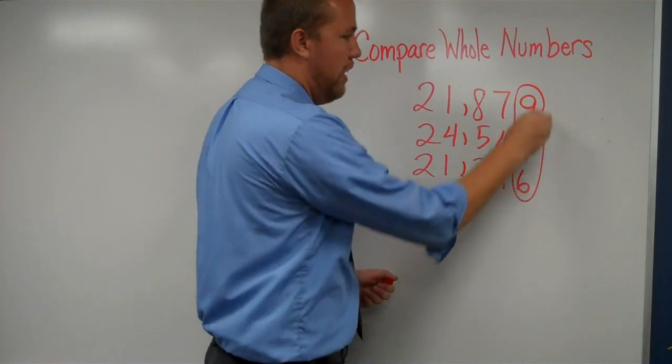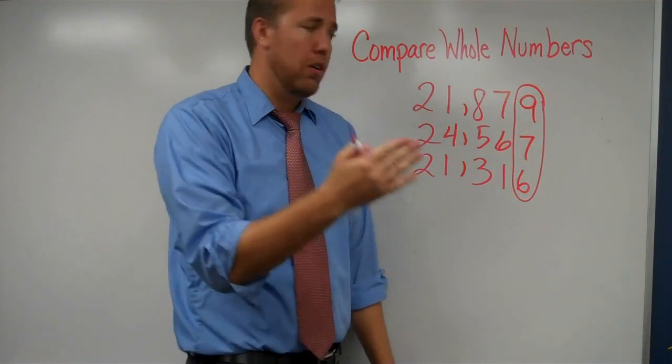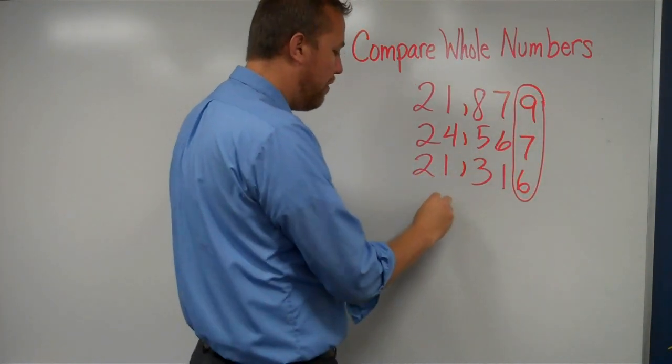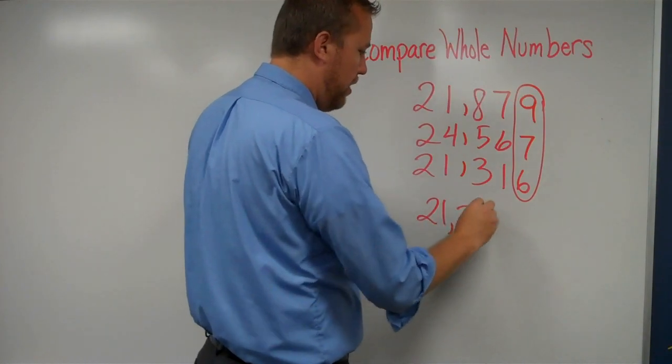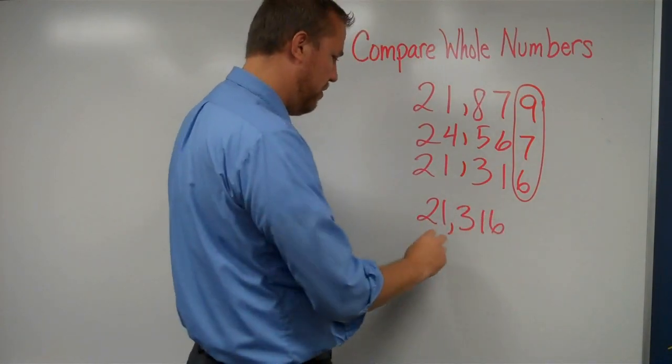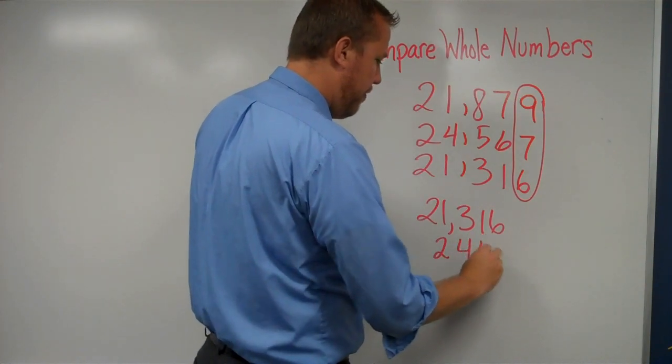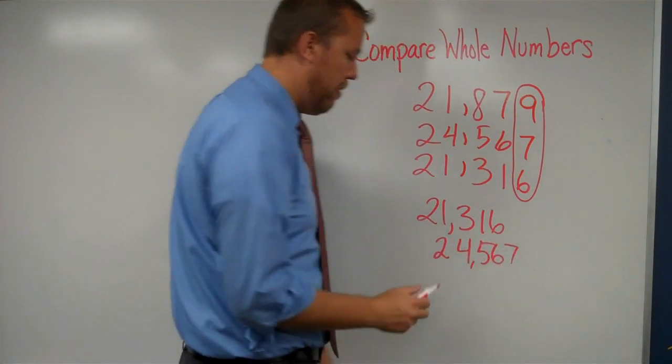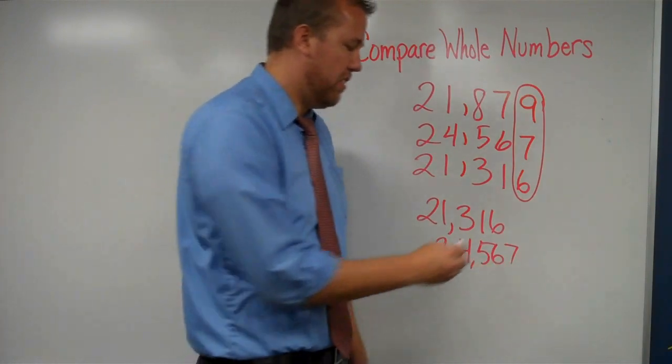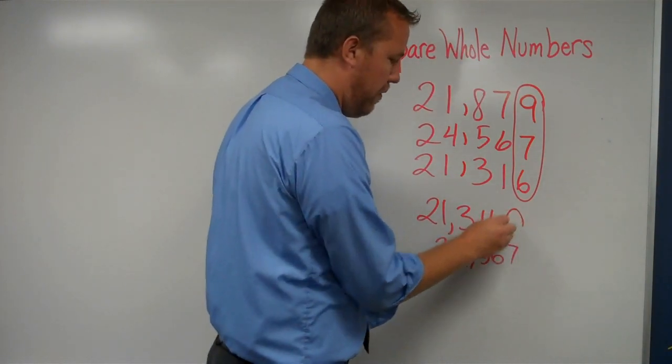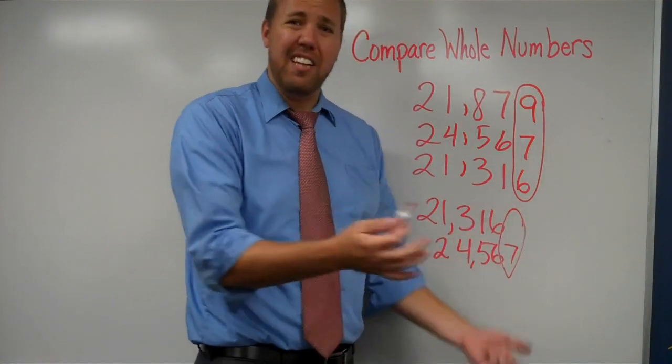Every single digit here is the ones place. If we're off a little bit and we try to do 21,316 versus 24,567, and I'm right here, this ones isn't lined up with anything.